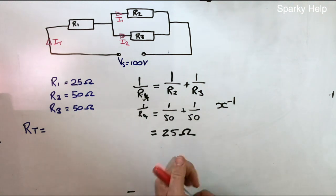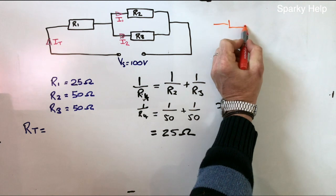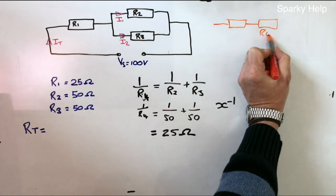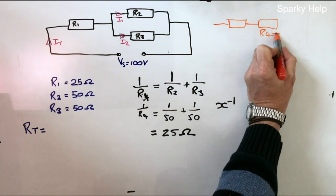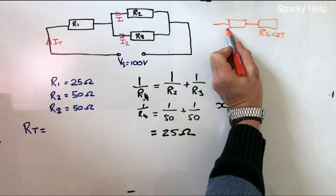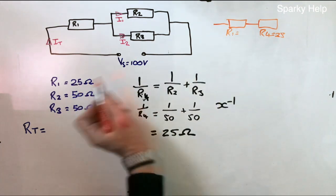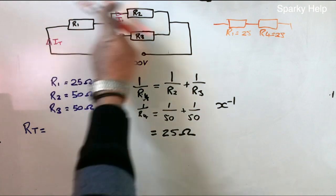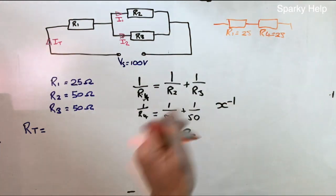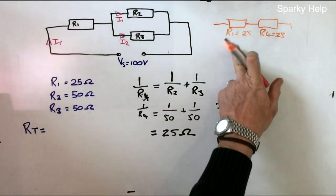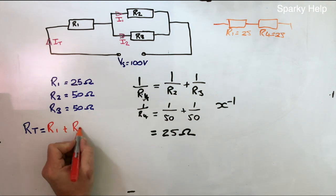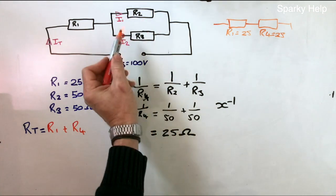That then breaks the circuit down, so what we've now got is this. R4, which we now know is 25, and R1, which is 25 as well. So we've now broken this circuit down into just a basic series circuit, and we can now find RT. RT becomes R1 plus R4, and R4 is this combination here.